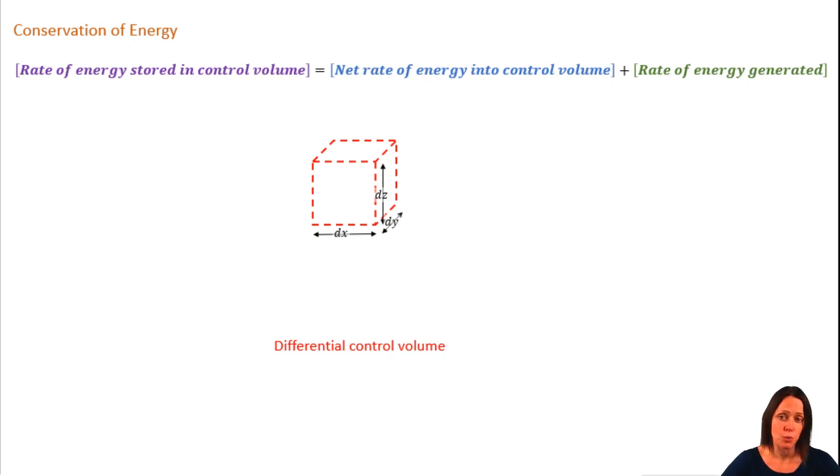Let's take a differential control volume with dimensions dx, dy, dz. The rate of the change of energy stored within that system is given by E dot with a little subscript st. And another way to think of that term would be dE/dt.